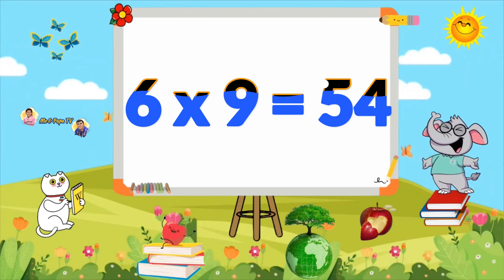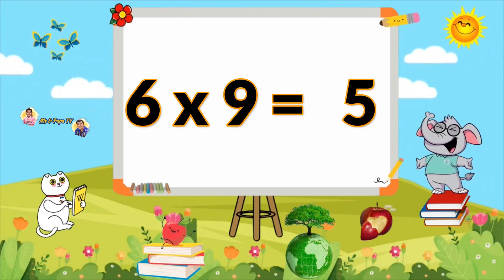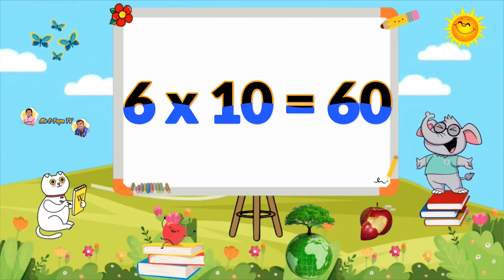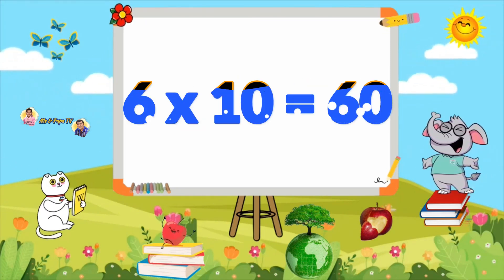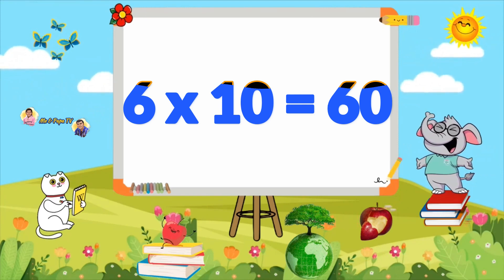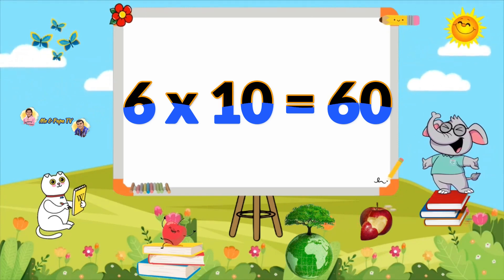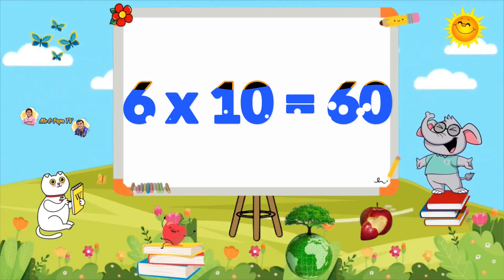Six nines are fifty-four. Six tens are sixty.